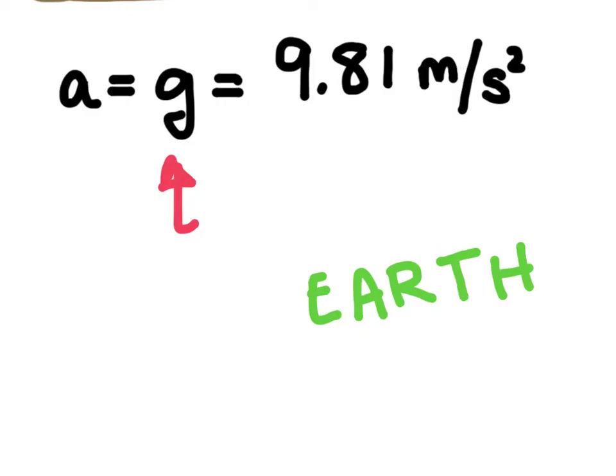This would be different depending on the planet that an object is on — the moon, for example, would have a different acceleration due to gravity. So all objects on Earth are going to experience an acceleration of 9.81 meters per second squared when they're falling. If you were to drop a hammer and a feather at the same time, they should land at the exact same instance because they're falling at the same rate.